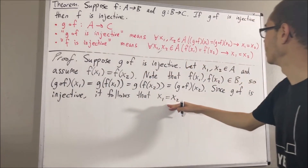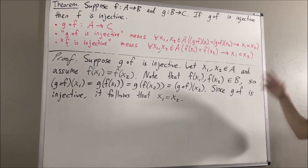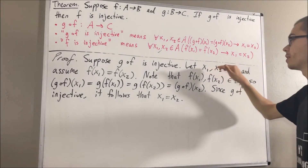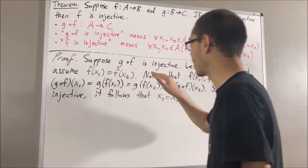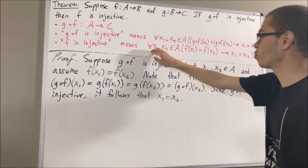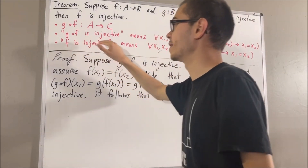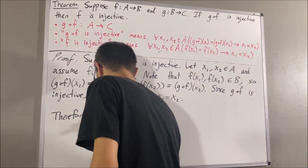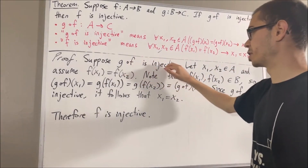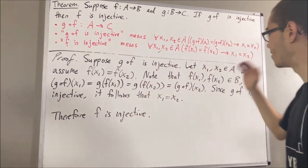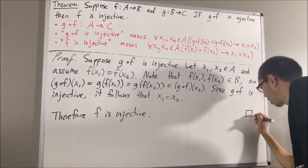And that is exactly what we wanted to show. So let's put this together. Given any two elements x1 and x2 in A, if f of x1 equals f of x2, then x1 equals x2. So we have proven precisely this statement, and that proves that f is injective. We have proven: if g compose f is injective, then f is injective. That is exactly what we wanted to prove, so this completes the proof.